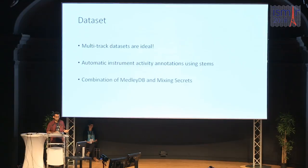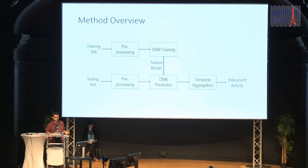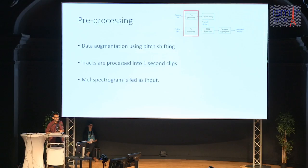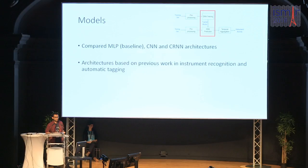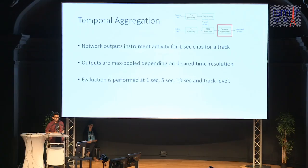Our system has a pre-processing step, DNN training, prediction, and post-processing with temporal aggregation. In pre-processing, we use data augmentation by pitch-shifting all tracks, use one-second clips, and mel spectrograms as input. We compare three models: a baseline multilayer perceptron, a convolutional neural network, and a convolutional recurrent neural network. For post-processing, our network outputs activity for every second, and we max-pool non-overlapping outputs to evaluate performance at one second, five seconds, ten seconds, and track level.